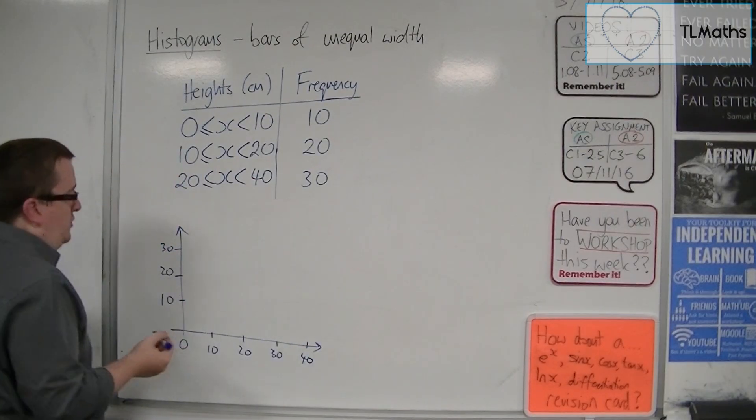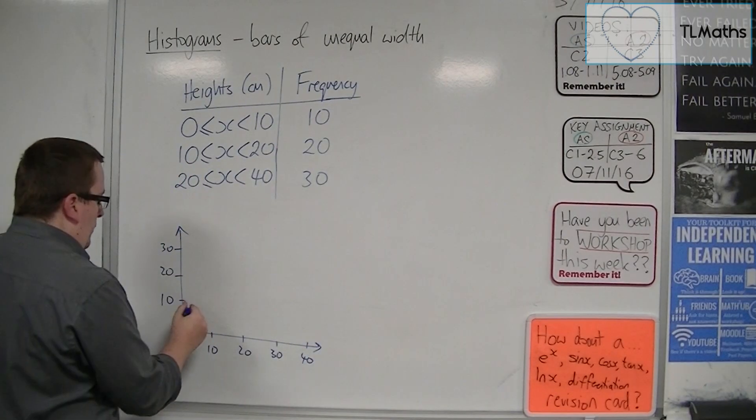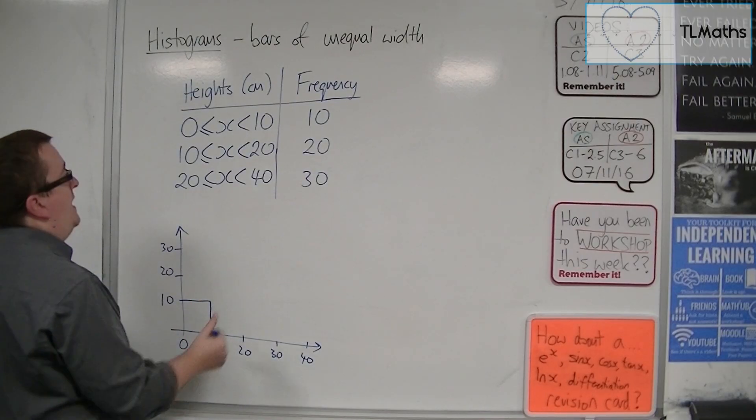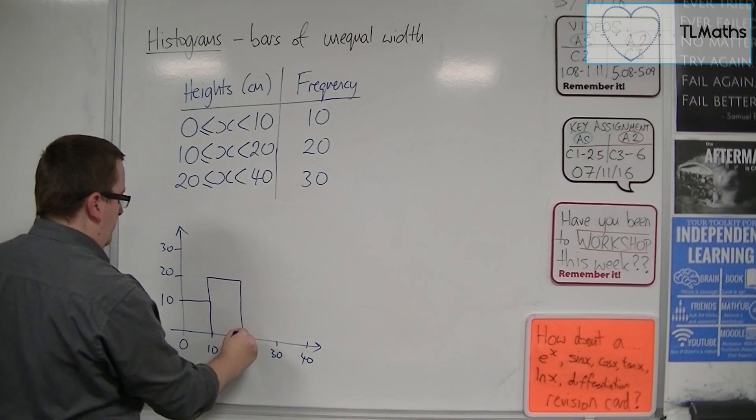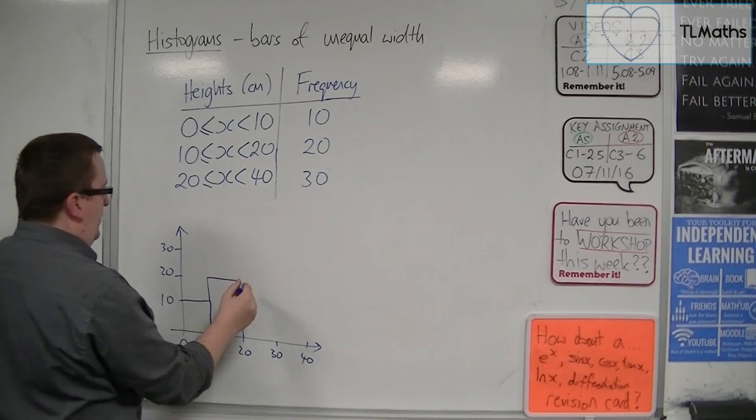So that's 20 to 40. If I've got 0 to 10 is 10, 10 to 20 is 20, and now 20 to 40 is at 30.